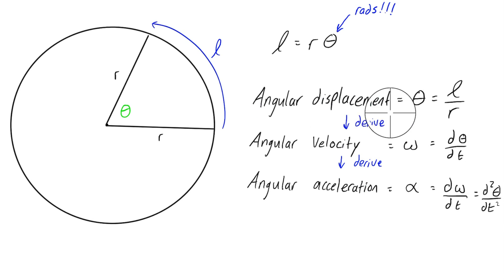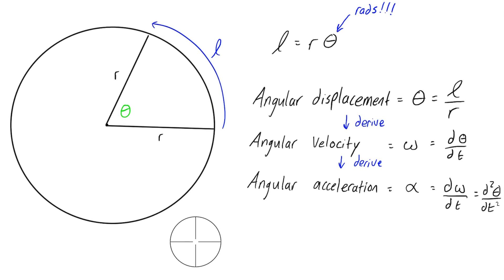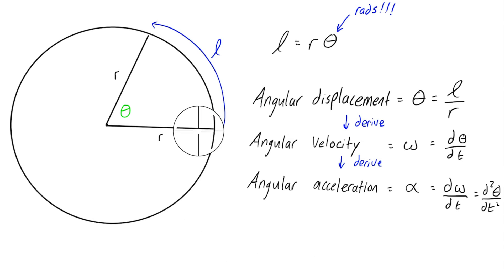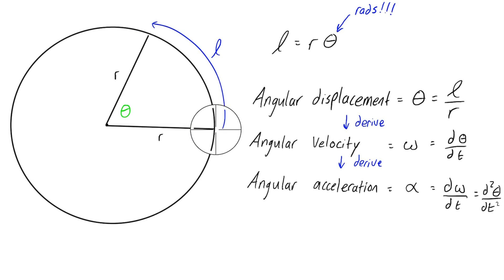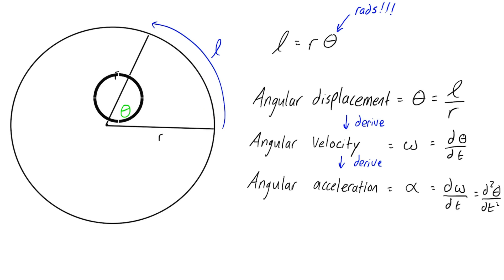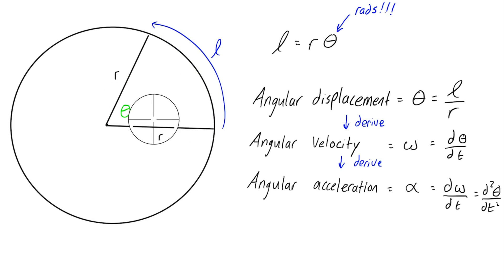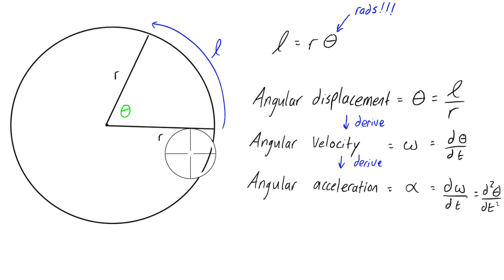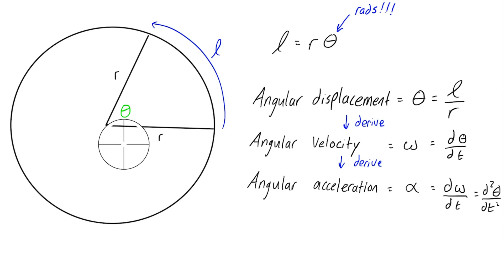I just wanted to make the connection that instead of looking at s — that linear displacement — in circular motion we're interested in angular displacement. And angular displacement is not the arc length; it's the angle subtended by the arc length, basically the number of revolutions or partial revolutions, expressed in radians, degrees, or revolutions.